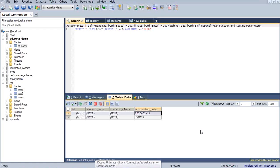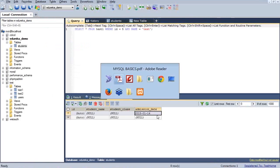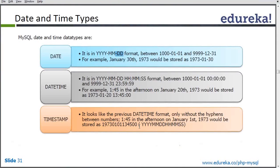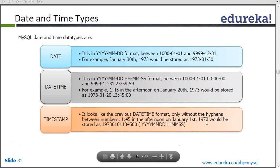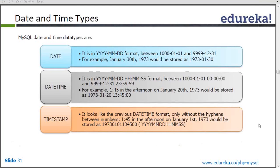Likewise, we can have a datetime column — if I give a datetime type, this column will accept time in addition to date. Then there is timestamp. Timestamp is basically the number of milliseconds — rather than saving the date, it will save the number of milliseconds for that particular date, starting from 1st of January 1973. So if you have given 5th January 2015, it will calculate milliseconds from 1st January 1973 till that date and store that number of milliseconds in that particular field.